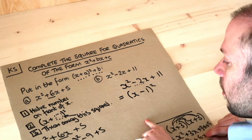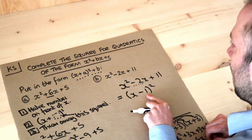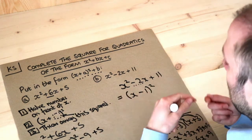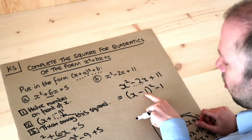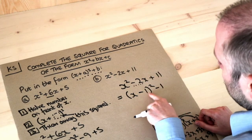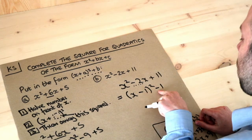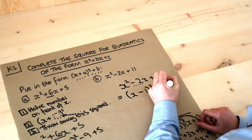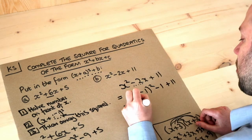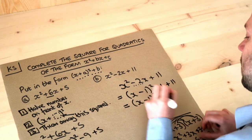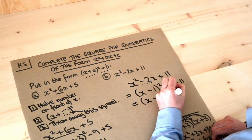Then we throw away this number squared. What's minus one squared? It's positive one — remember, negative times negative is positive. So we subtract one. Regardless of whether this is positive or negative, we always subtract that number squared. We've still got the plus 11 at the end. So tidying up: x minus one squared, minus one plus 11 is plus 10. And that is the final answer.